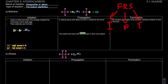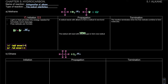Remember IPT - institute pengajian tinggi. There are three steps. For initiation, the first step, we only get one step. But for the second step, propagation, we get two steps. The third step, termination, we will get three steps. So that is the hint - IPT has three steps.